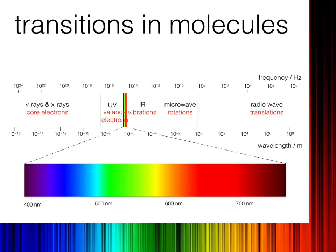Each of these match to different parts of the electromagnetic spectra. I've shown you this figure before, but now I've amended it to match the transitions that these frequencies and wavelengths of light correspond to. Starting at the UV region, this is my transition of valence electrons — my outer shell of electrons transitioning from, for example, a HOMO, highest occupied molecular orbital, to a LUMO, lowest unoccupied molecular orbital.